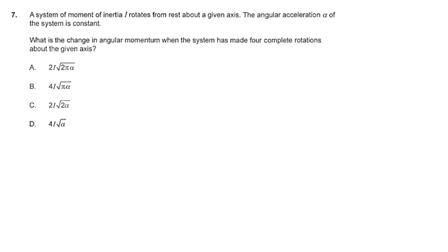IB Physics, May 2025, HL Paper 1A, Question 7. A system of moment of inertia I rotates from rest about a given axis. The angular acceleration alpha of the system is constant. What is the change in angular momentum when the system has made four complete rotations about the given axis?